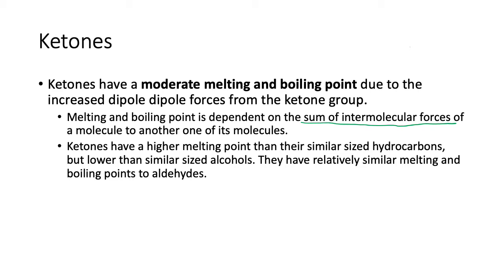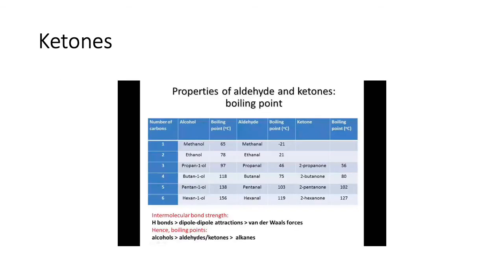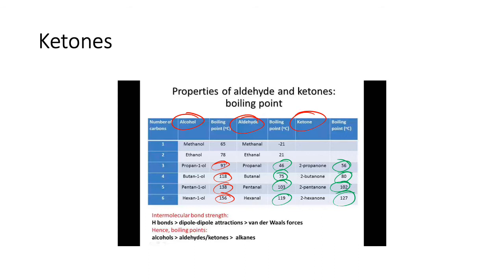Ketones are relatively similar in melting and boiling points to aldehydes because they have roughly the same strength of dipole-dipole interactions. In this table, you can see alcohols, aldehydes, and ketones — aldehydes and ketones are roughly the same for the same molecular mass, and significantly lower than alcohols, because of hydrogen bonding in alcohols and the lack of it in ketones.